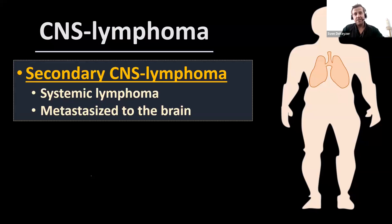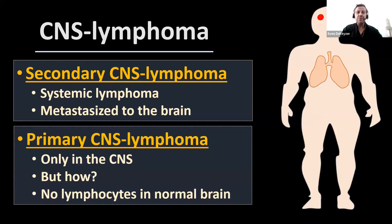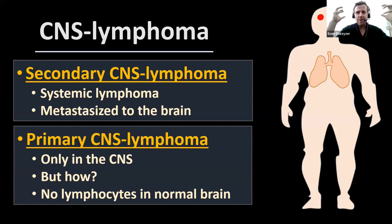What is CNS lymphoma? It can be metastatic. You can have secondary and primary central nervous system lymphoma. A secondary CNS lymphoma occurs in a patient with systemic lymphoma, in which the lymphoma metastasizes to the brain. Then we have primary CNS lymphoma, in which the patient only has lymphoma in the brain — which is a bit bizarre because normally there are no lymphocytes in the brain.